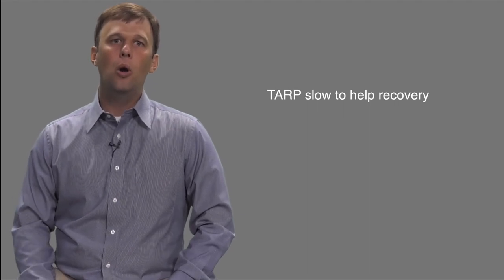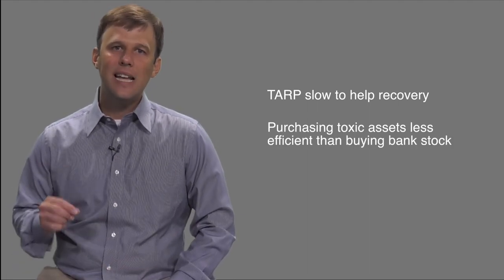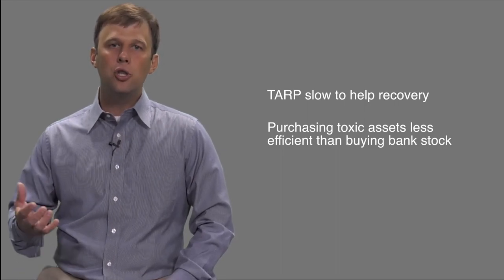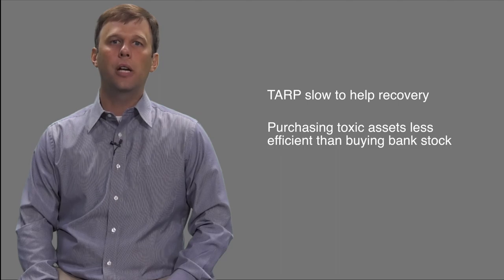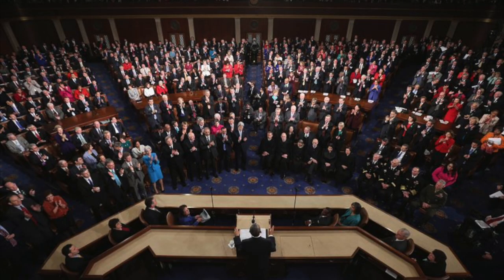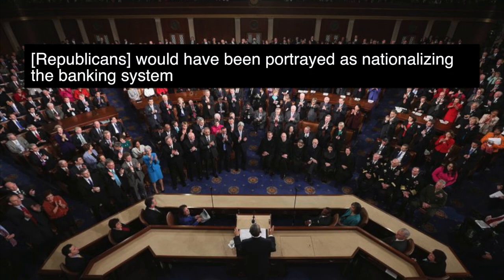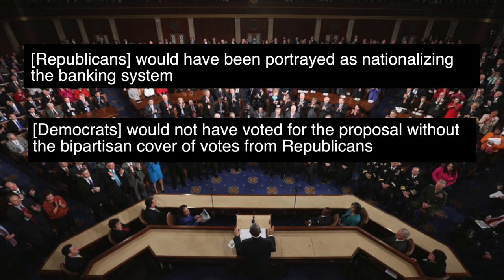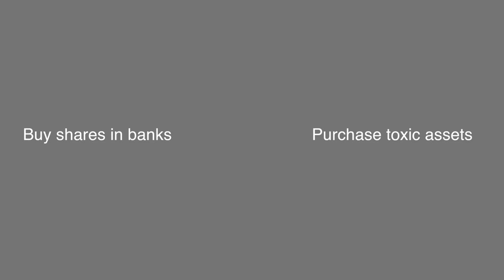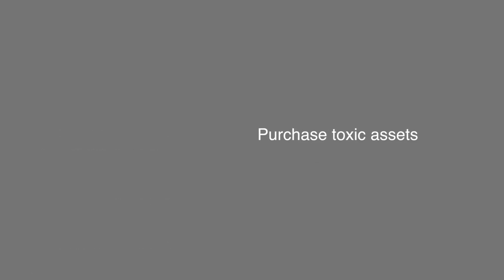The second concern was that overpaying for the banks' assets was a less efficient way of recapitalizing banks than directly providing capital in the form of purchasing shares in the banks. This idea was mentioned in the original discussions, but Treasury officials believed that Congress would never have passed this proposal. Philip Swagel, an economist at the Treasury at the time, said that Republican House members would have rejected the proposal because it would have been portrayed as nationalizing the banking system, and Democratic members would not have voted for it without bipartisan cover. So the idea of directly buying shares in the banks was dropped in favor of purchasing toxic assets.